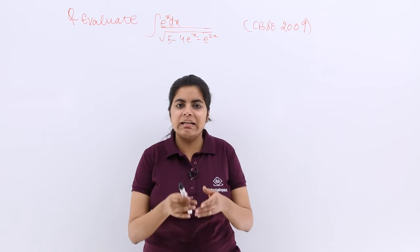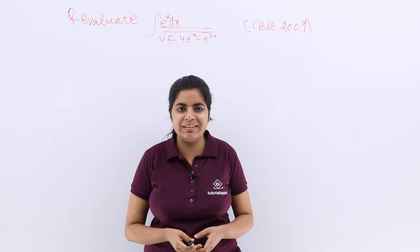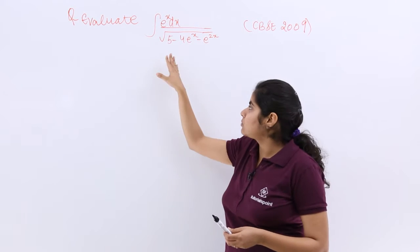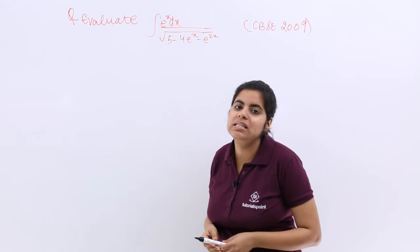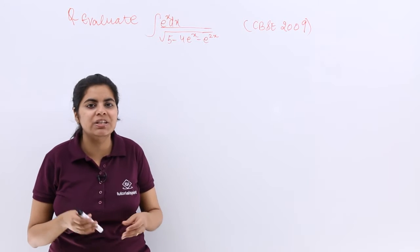In this video, let's see another numerical problem based on the same previous format that we started earlier. So it is evaluate e raised to the power x dx upon under root 5 minus 4e raised to the power x minus e raised to the power 2x asked in the CBSE previous year examination year 2009.